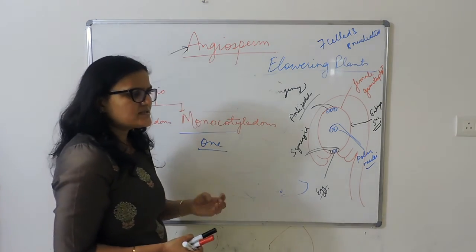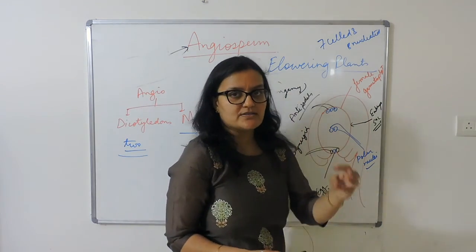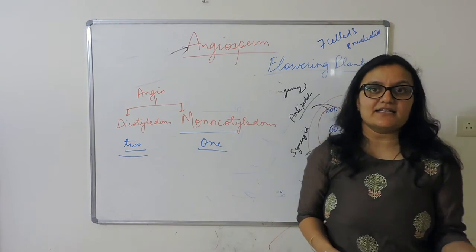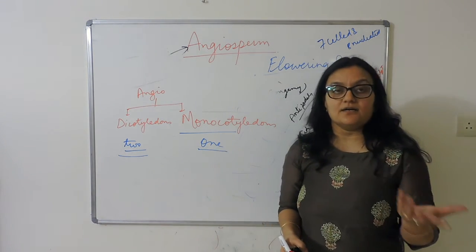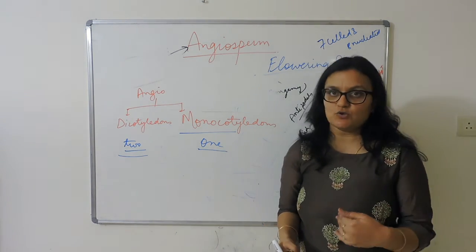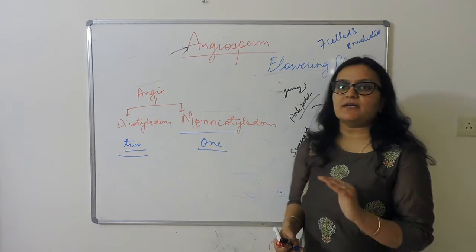Then we talk about economic importance. We have fruits and vegetables, medicinal use like neem, oils like mustard oil and groundnut oil, and medicines. Angiosperms are very broadly used. We will study all the details about angiosperms in detail - morphology and anatomy of angiosperms in the next coming chapters of 11th grade.